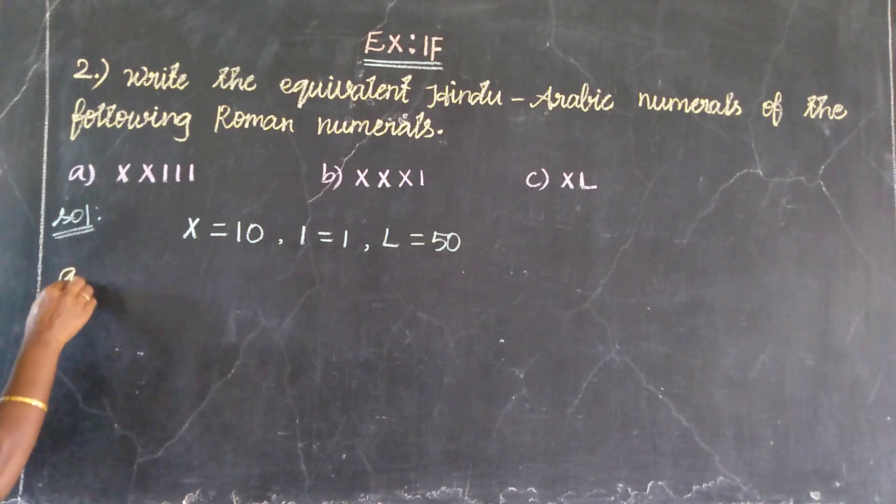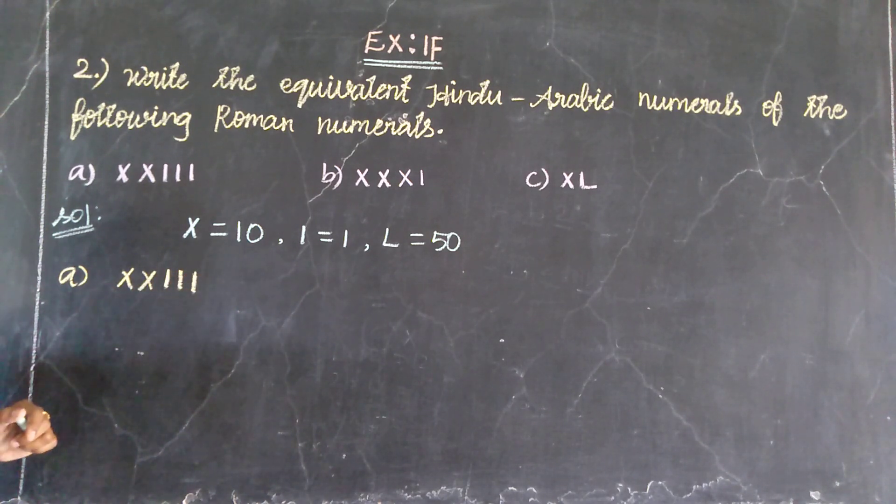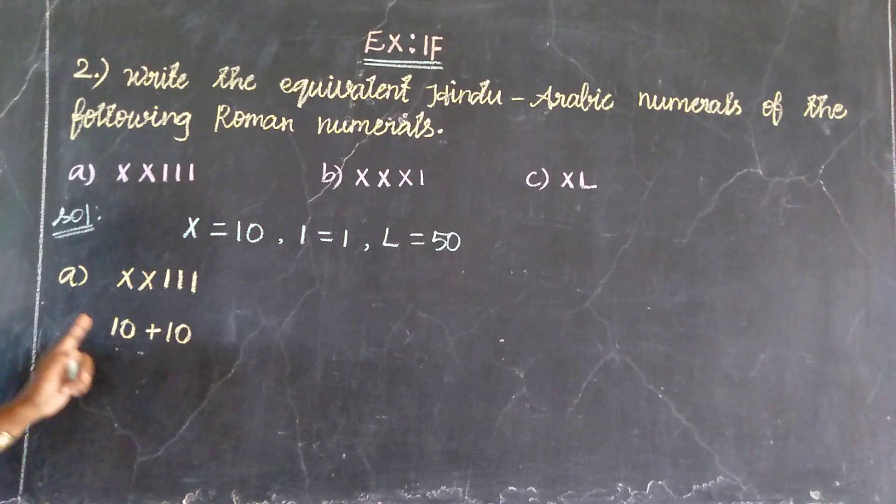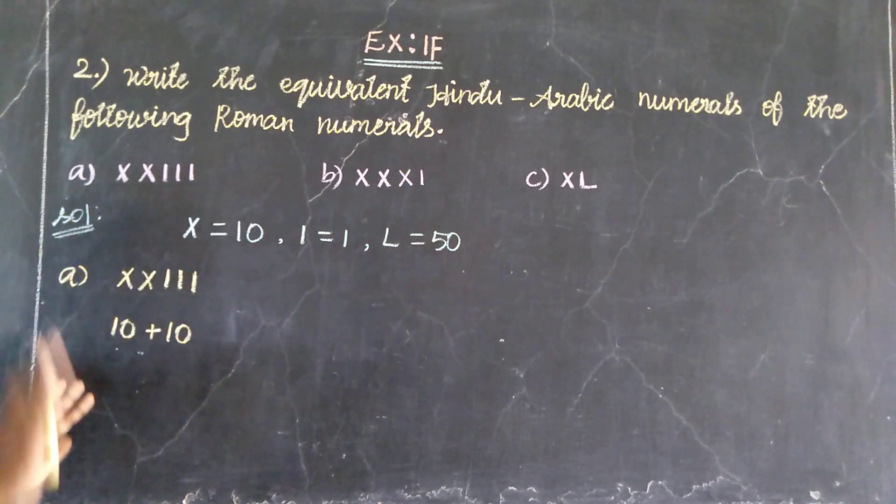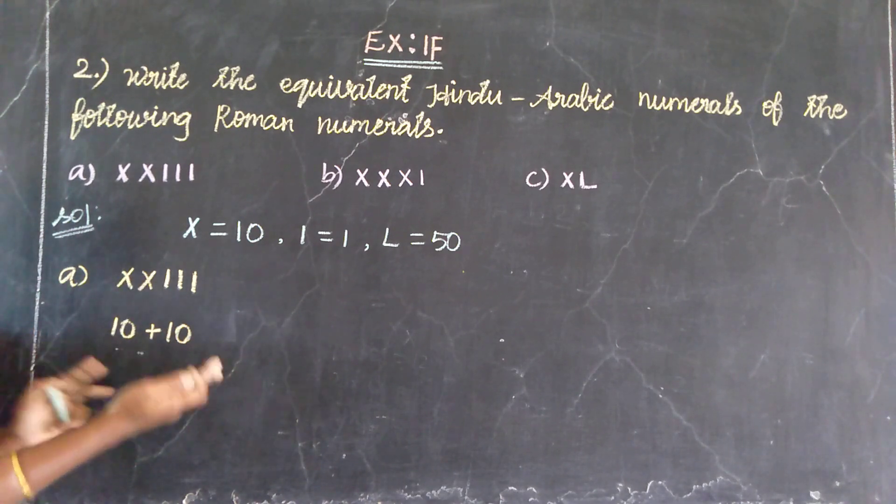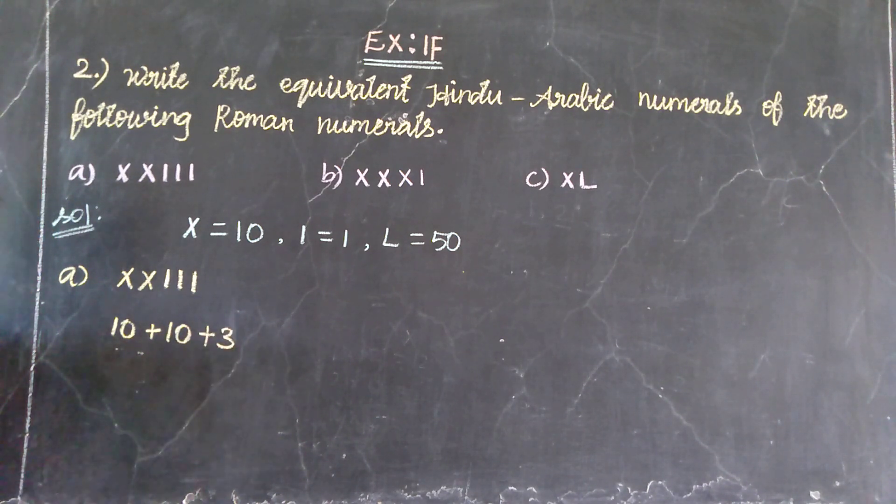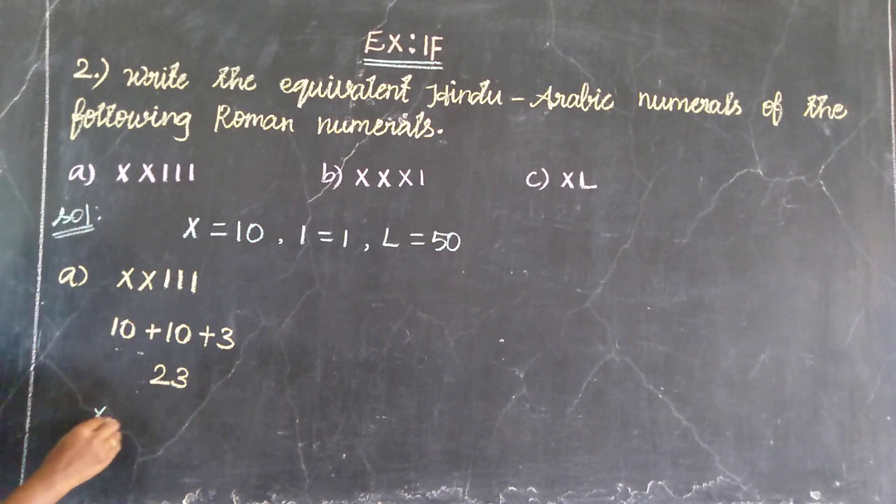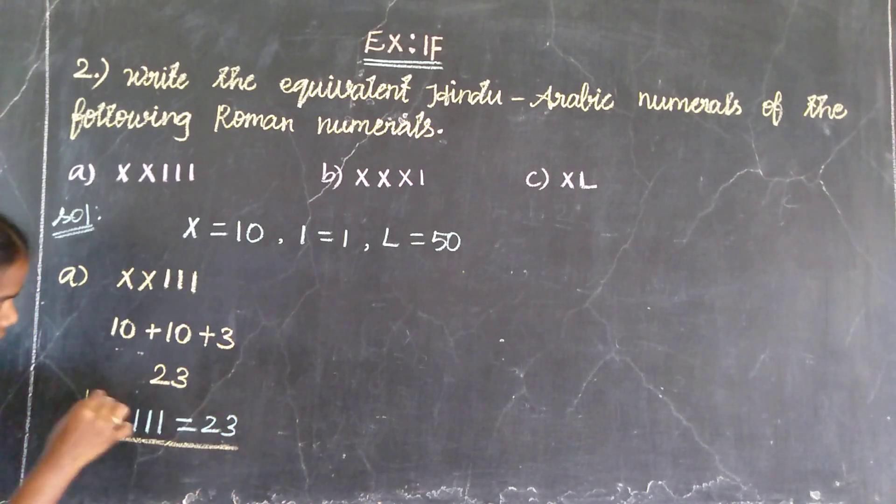See, first problem. Then A, X, X, X, I, I, I. Then X value, yes, 10. Then next X value, using addition value, so 10. Additions are used. Increasing order, highest value to smallest, addition. Smallest value to highest, order change, subtraction. So first is 10, next is plus 10 plus 3. So 10 plus 10 is 20, 23. So first Roman numeral equal on into Arabic numerals, 23. So XXIII is equal to 23.